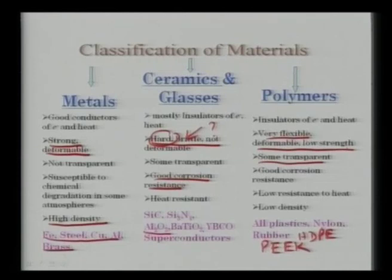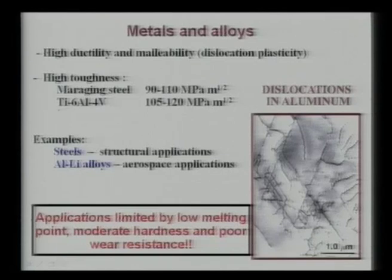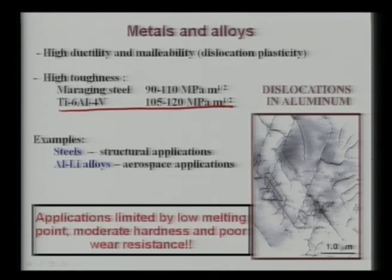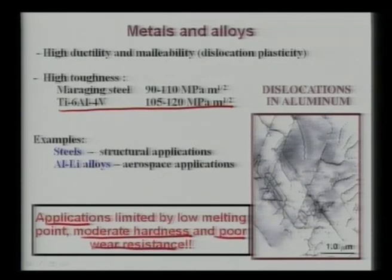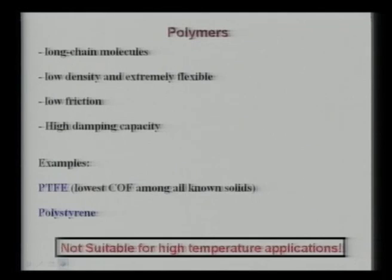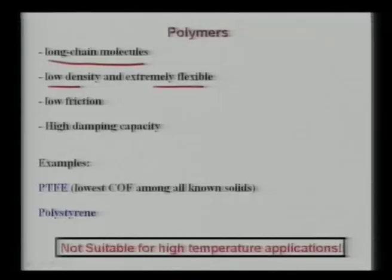Some biometallic alloys like Ti-6Al-4V have extremely high fracture toughness of 105–120 MPa√m, while most ceramics have toughness less than 10 MPa√m — so metals used in biological applications can have one order of magnitude higher fracture toughness than competing ceramic-based materials. However, metal applications are limited by moderate hardness and poor wear resistance. Polymers are composed of monomers forming long chain molecules, have very low density and are extremely flexible, with low friction. Typical polymers used in heart valves include polytetrafluoroethylene.